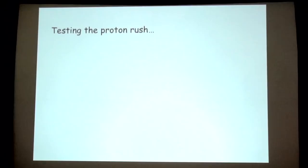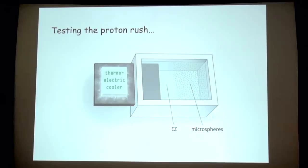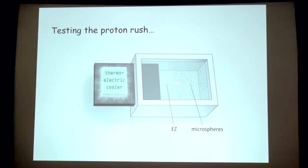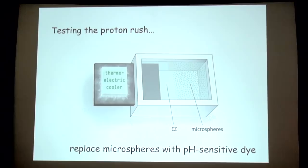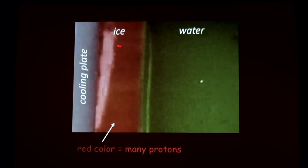We did an experiment to demonstrate this. In a chamber with microspheres, we started cooling the plate and got a very large EZ next to it. When we put pH dye in instead of microspheres, the zone that was freezing turned red — red meaning a high concentration of protons. So it appears that a lot of protons are rushing in during the time of freezing.